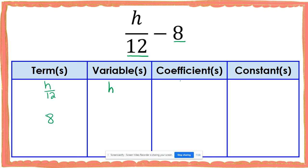Anytime I have a variable, I always have a coefficient as well. In this problem, it looks as if h is not being multiplied by anything — h is technically being divided by 12. But anytime you have a variable being divided by a number, that's the same as saying that variable being multiplied by a fraction. So this would be 1/12. If I multiplied 1/12 times h, I would actually get h over 12, which means the coefficient for this would be 1/12. The constant in this problem is going to be 8, because 8 is a term that does not have a variable with it.